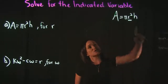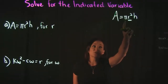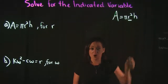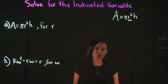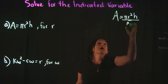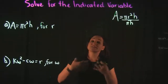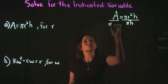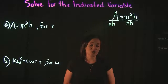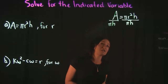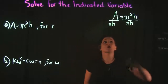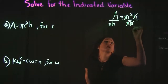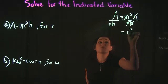Since we're trying to solve for r, that means we need to get rid of pi and h. Pi and h are being multiplied by r, and the opposite of multiplication is division. So if I want to get rid of pi and h, I need to divide by them. Remembering that what I do to one side of the equation, I must do to the other side — so I'm going to divide both sides by pi and h. On the right-hand side, pi cancels with pi and h cancels with h, leaving me with r squared.